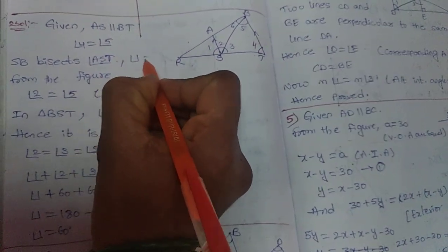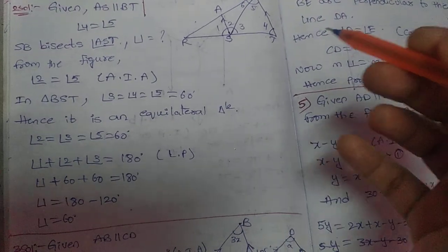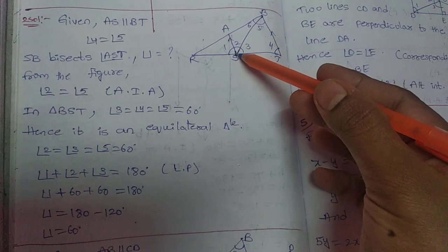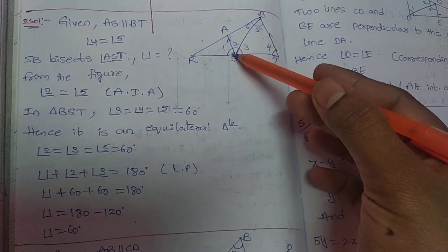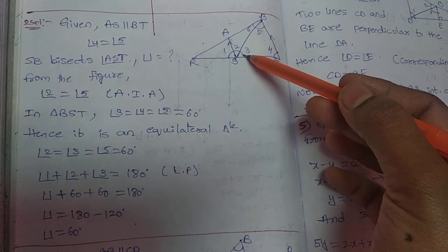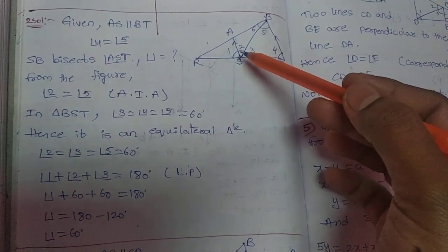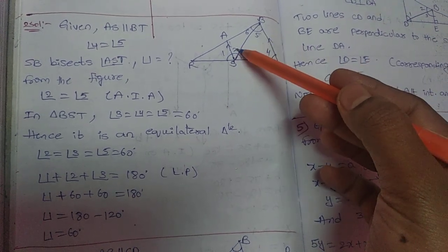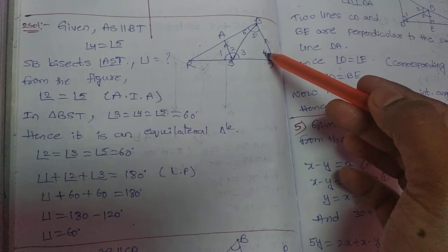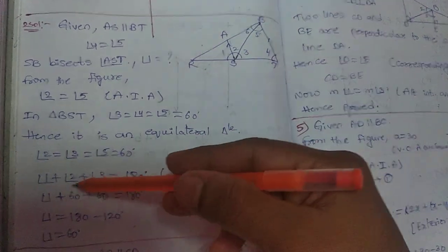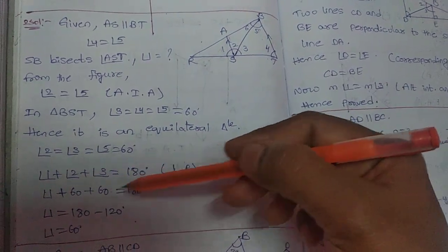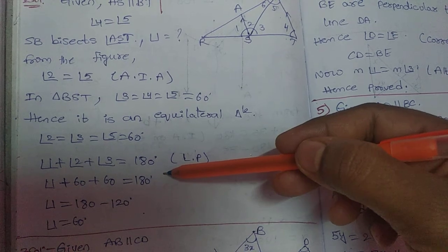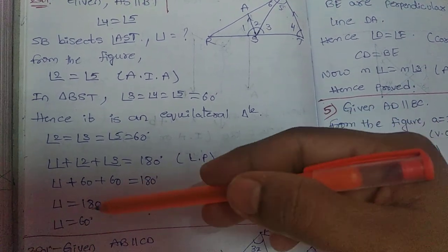Angle 1 is what we should find out. The three angles on a straight line form 180 degrees. So if we add these three angles we get 180. Angle 2 and angle 3 are each 60 degrees. Angle 1 plus angle 2 plus angle 3 equals 180. Substituting: angle 2 and angle 3 give 60 plus 60 equals 120. Transposing: 180 minus 120 equals 60. So angle 1 is 60 degrees.